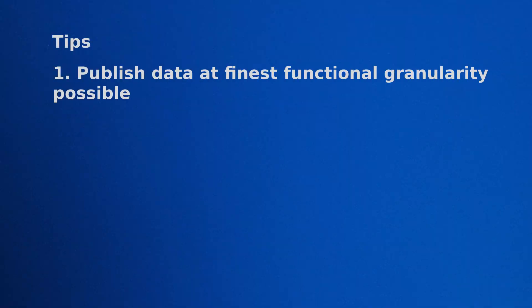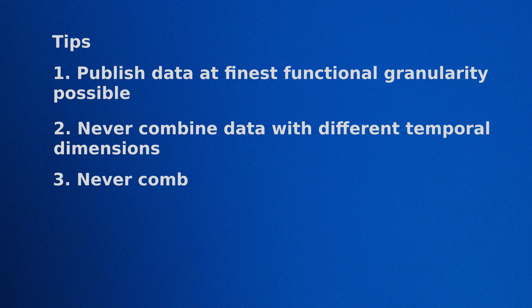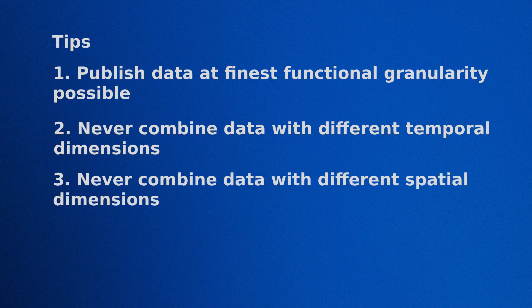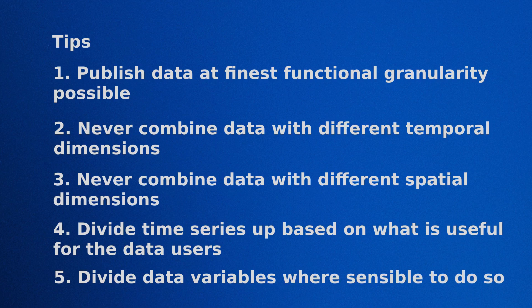So to wrap up, some final tips. Publish data at the finest functional granularity — that's not individual measurements, but it's also not combining stations into one dataset. Never combine data with different temporal dimensions: if you have one measurement every second and a different measurement every hour, publish them in separate files. Also, don't combine data with different spatial dimensions. Divide time series up based on what's useful for the data users. And finally, divide up data variables where it's sensible to do so — you as the data creators will know better than I do about when that is.